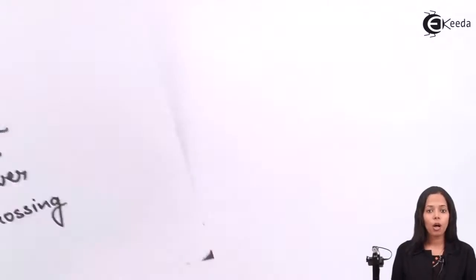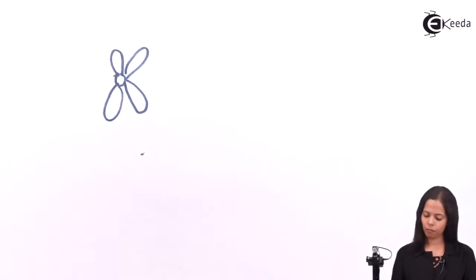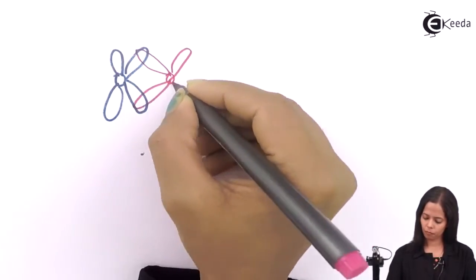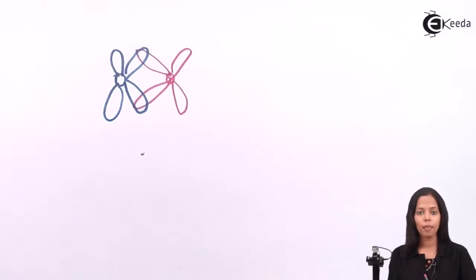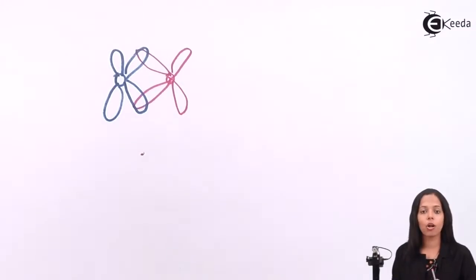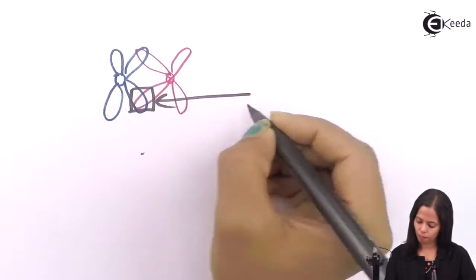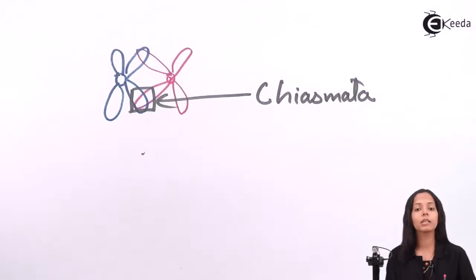Now I'll show you how the chiasmata looks and what exactly happens at the chiasmata. You can see two bivalent chromosomes in the nucleus. If you observe carefully, one is getting overlapped on another. This happens when they are coiling and twisting around each other. The point where they are overlapping is called chiasmata.